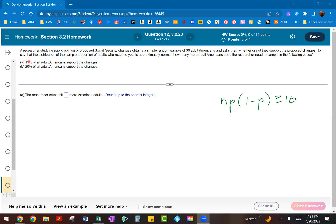This one is talking about a researcher studying public opinion of proposed Social Security changes who obtains a random sample of 30 adult Americans and asks them whether or not they support the proposed changes. To say that the distribution of the sample proportion of adults who respond yes is approximately normal, how many more adult Americans does the researcher need to sample in the following cases?